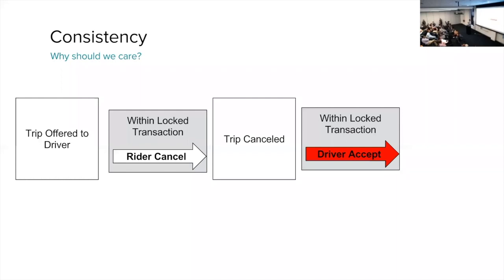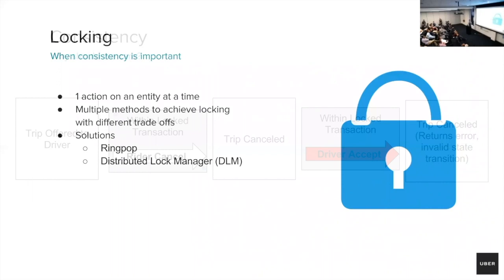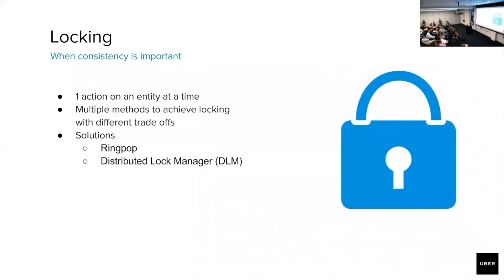The distinction here is now we have the most up-to-date state machine. The trip was canceled, so when we process the driver accept transaction, we know that it isn't valid. You cannot accept a canceled trip, so we will error the request out and notify the driver. There is a deterministic end state in these sequential transactions. Locking gives us a guarantee that only one transaction is occurring at a given time on an entity. This allows us to give some level of consistency in our system.